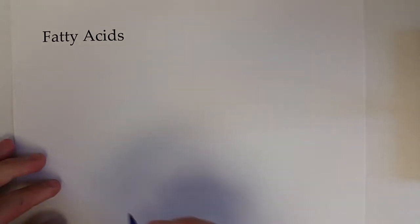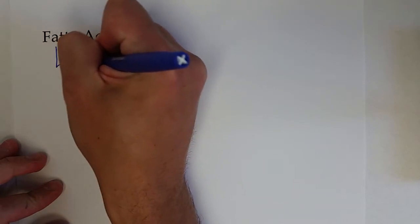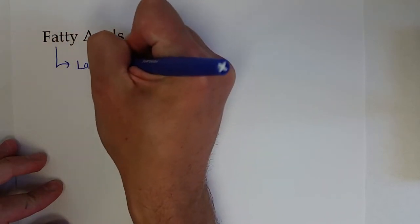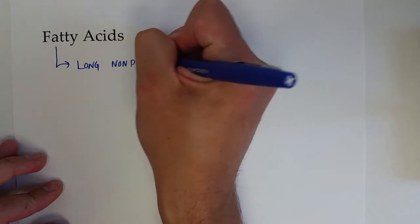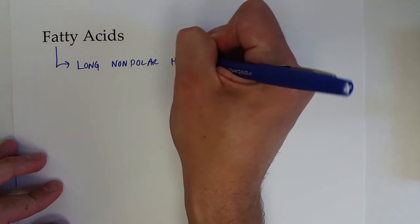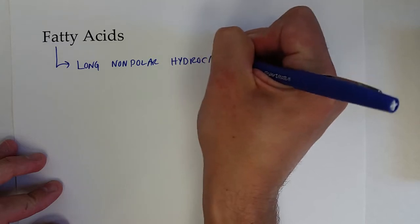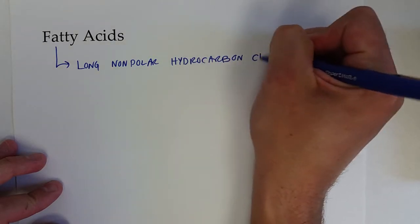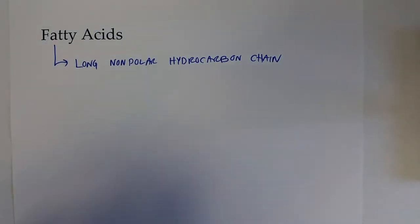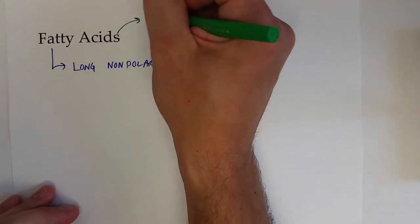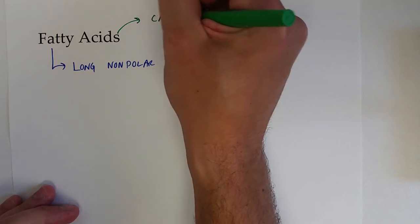So let's start with fatty acids. The name tries to give it away what's going on. Fatty acids have a long, non-polar hydrocarbon chain. And the word acid implies that, of course, they have an acid functional group. They have an end with a carboxylic acid.